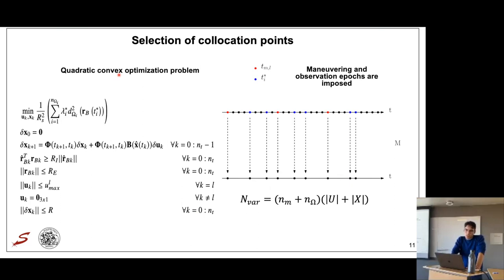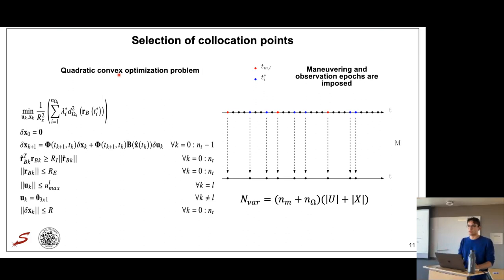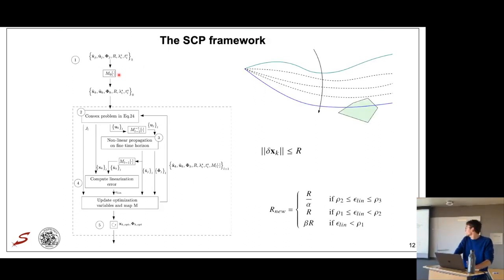Computing observation epochs requires fine time discretization of the trajectory, potentially yielding over 4,000 degrees of freedom. To reduce this, we perform domain reduction, considering only epochs where something happens — a maneuver or an observation. This reduces the problem from around 4,300 degrees of freedom down to 126, giving a massive reduction in problem size and computational cost.